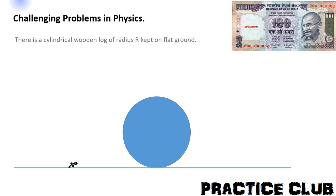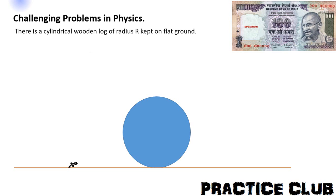The problem is there is a cylindrical wooden log of radius R kept on a flat ground. This is the cylindrical log of radius R kept on a flat ground. An insect wants to jump over the log from left side to the right side.